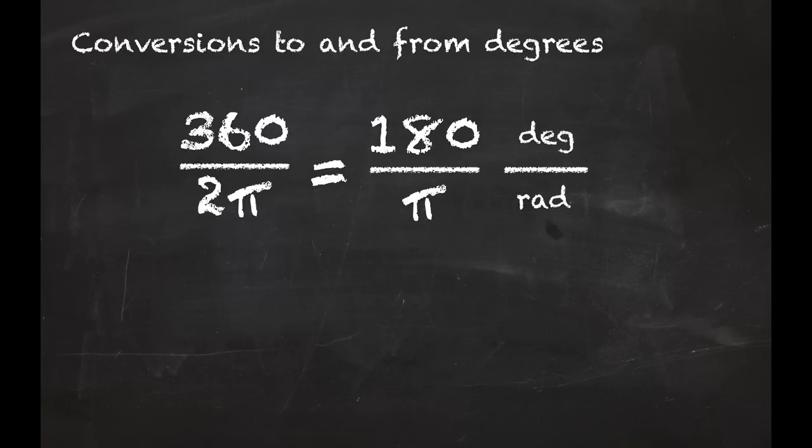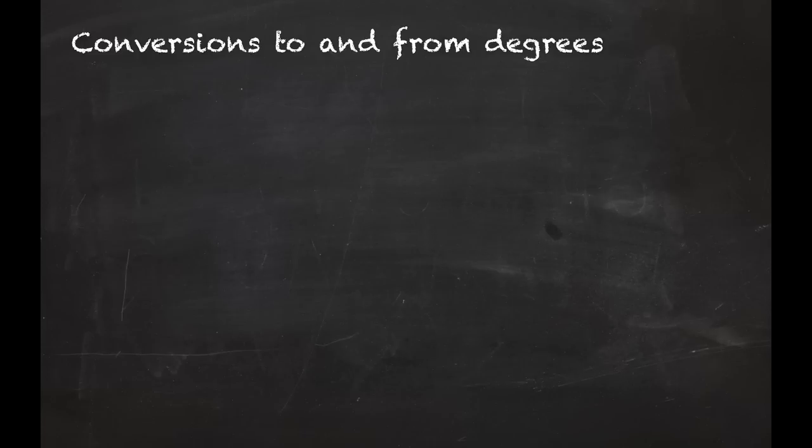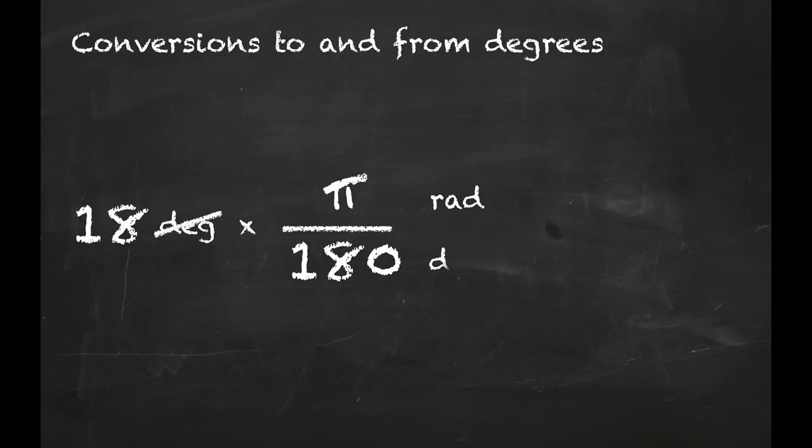That's the conversion factor we can use to go from radians to degrees. If we take the reciprocal, we'll get the conversion factor that'll enable us to go from degrees to radians. For example, 18 degrees—if we multiply by π over 180, we can do some unit analysis and we see that the degrees cancel. 18 over 180 leaves 10 in the denominator, so 18 degrees winds up being the same as π over 10 radians.